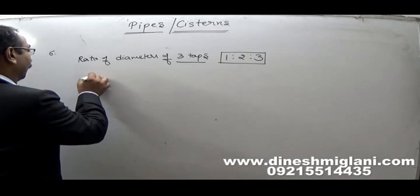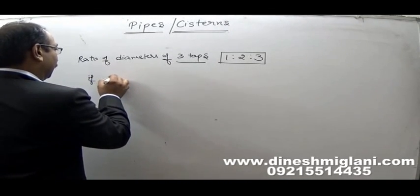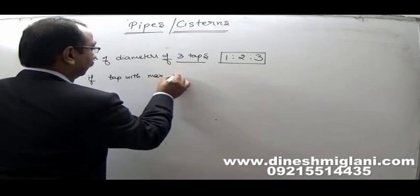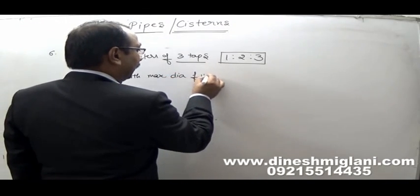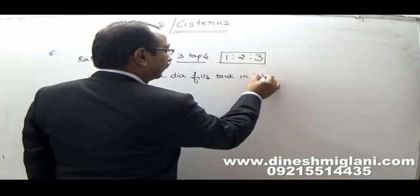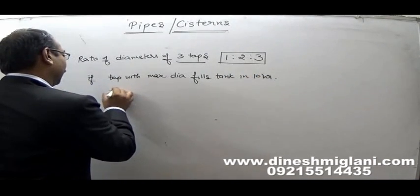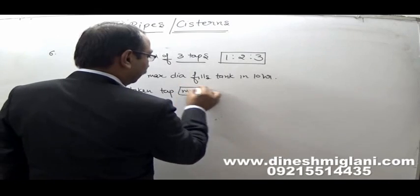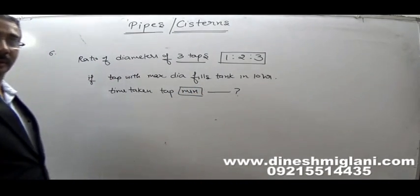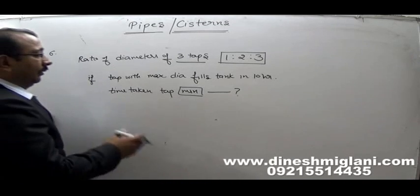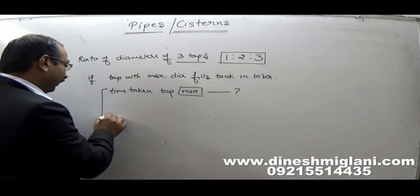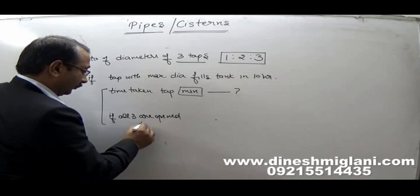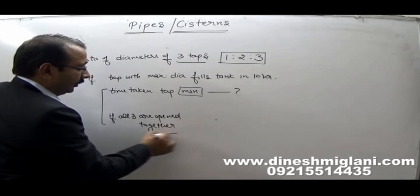The question may also ask: what is the time taken if all three are open together? Let us understand: whenever the ratio of radius or diameter is given, time taken is inversely proportional to the area of cross section.